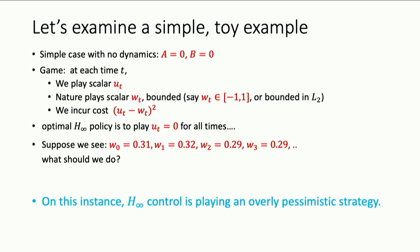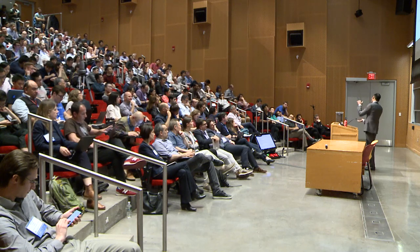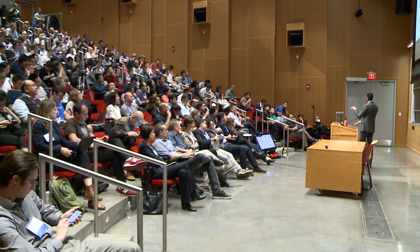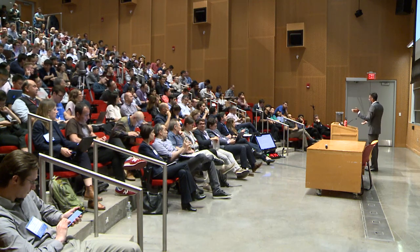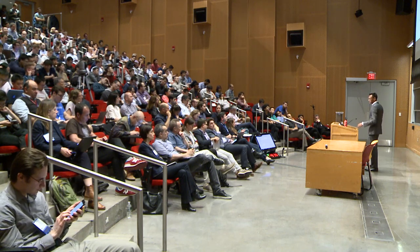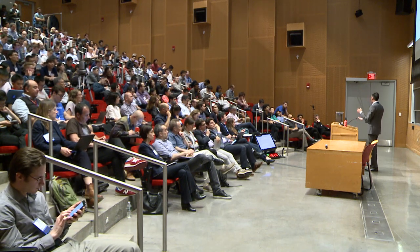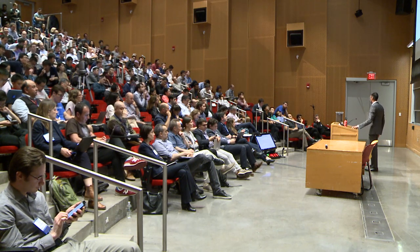Would we be throwing out robustness if we started playing something like 0.3? Even here, as long as it's bounded in L2 — that would be the sum of squares of the W_t's — the min-max strategy, as long as the constraint set is symmetric in a pretty general sense, is going to be to play 0 all the time. There's a sense in which you might not want to play all zeros all the time.